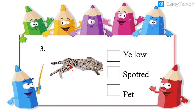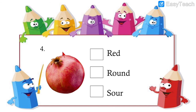The next image is of a wild animal — very dangerous. The options are yellow, spotted, or pet. It cannot be kept as a pet, but yes, it is yellow and it is spotted — it has spots on its body. So yellow and spotted are the two adjectives for this animal. Next, a fruit of red color — it is also round, but it is not sore. So red and round are the two correct options for this fruit.